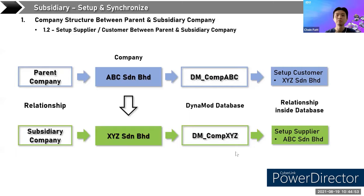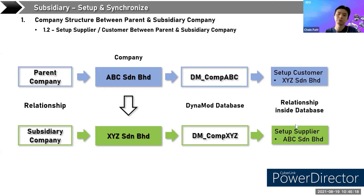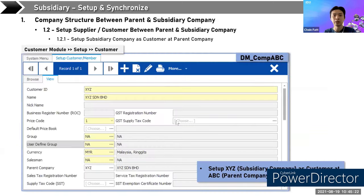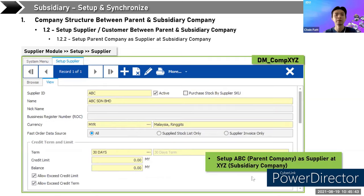After you set up the databases, you have to set up the customer and the supplier for company ABC and company SYJ. At company ABC, you have to set up a customer for the subsidiary company SYJ. And at the SYJ company, they have to set up ABC as the supplier. After this setup, you can see on the sample screen: at ABC, you set up the customer for SYJ — SYJ is the subsidiary company and is a customer for the parent company ABC. Then the SYJ company sets up a supplier for the ABC company.